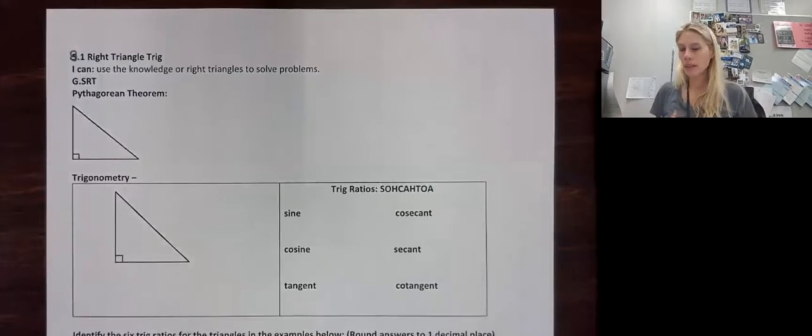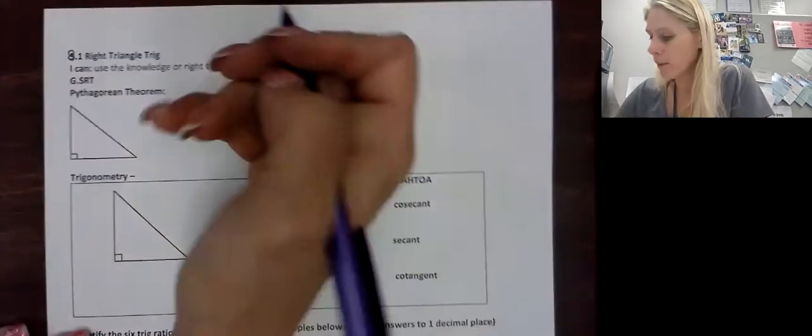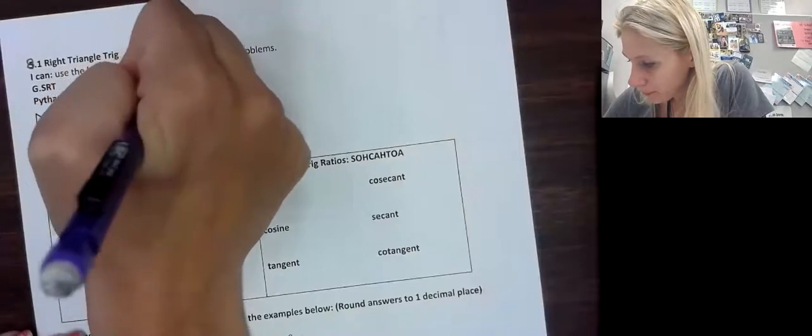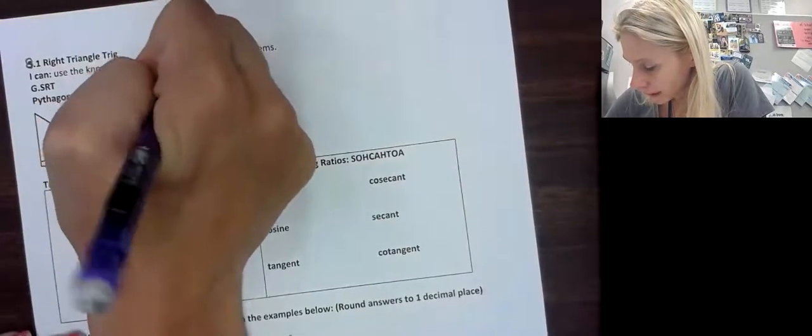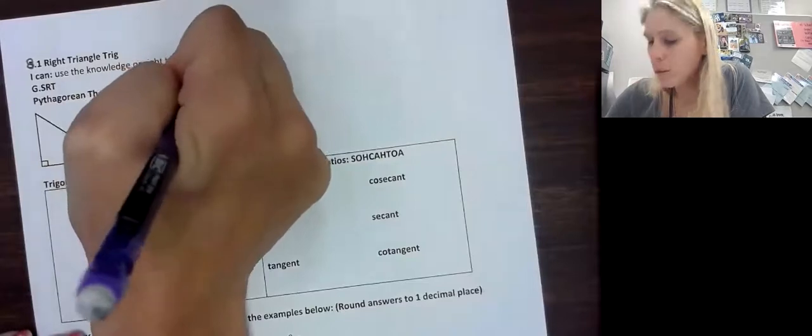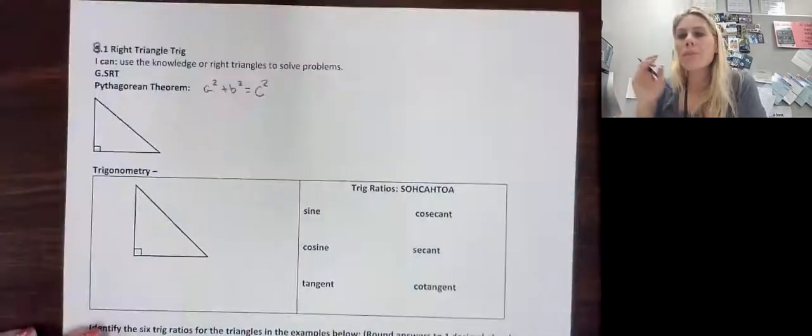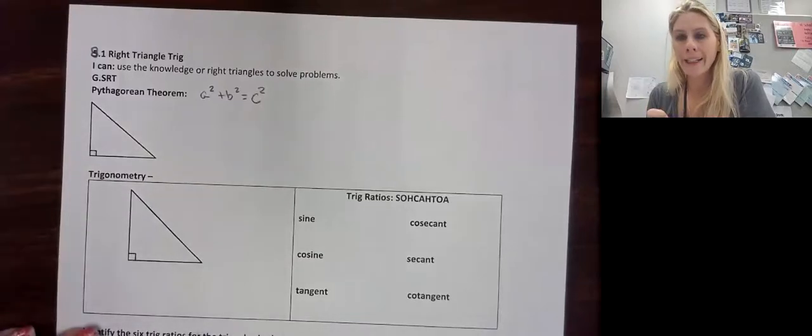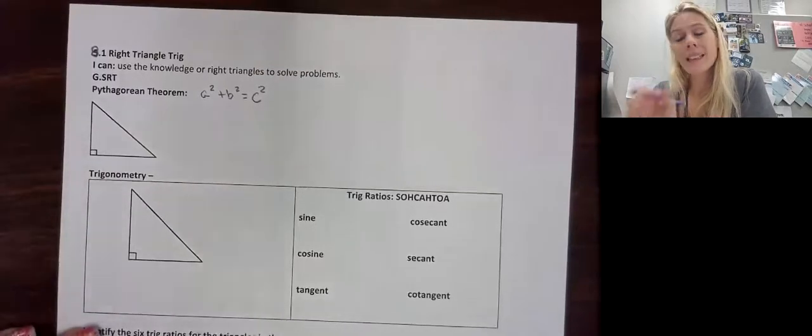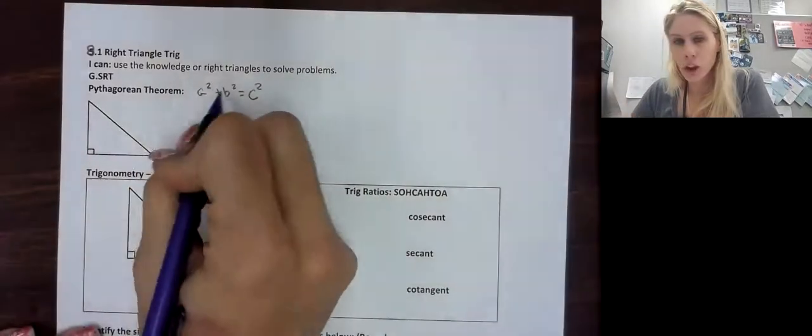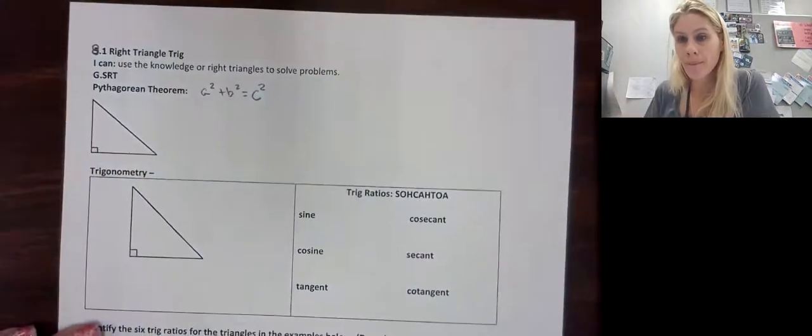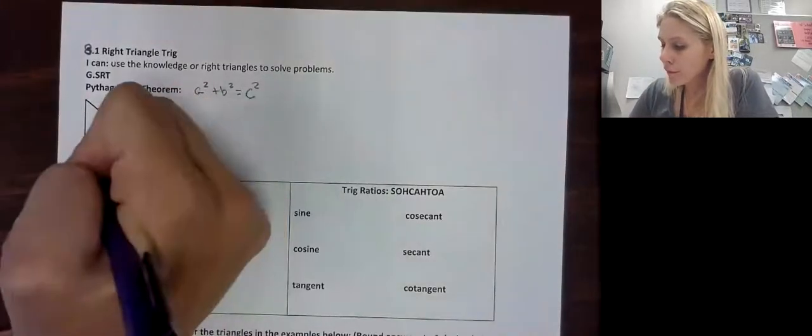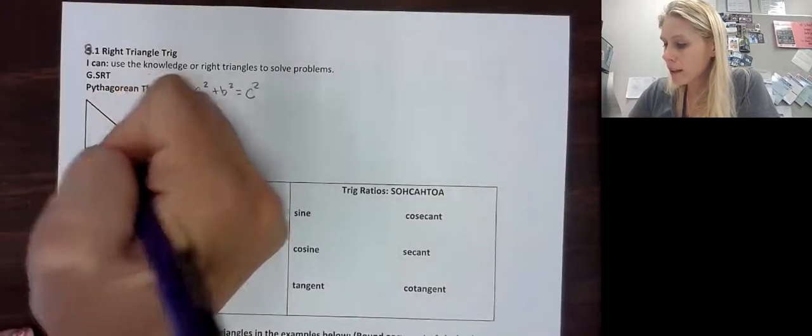So let's talk about the Pythagorean theorem. What is the Pythagorean theorem? It is a squared plus b squared equals c squared. Now, which of these - a, b, or c - is the most important to identify? C. Why? Because c is by itself. These two can interchange. Now, what is c? C is the longest side. It is the side across from the right angle.